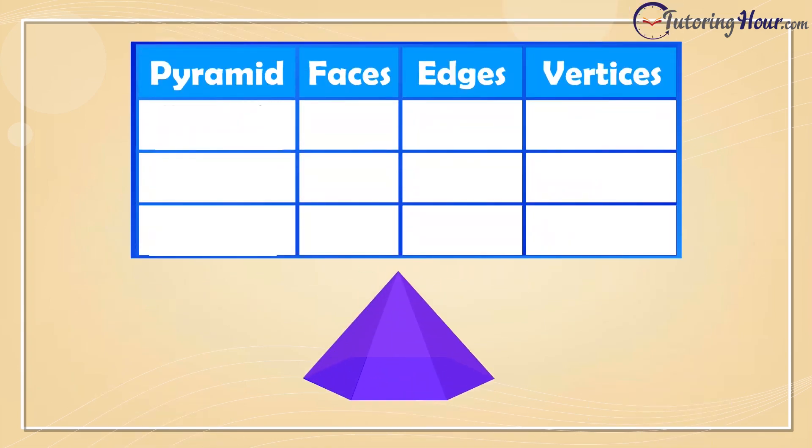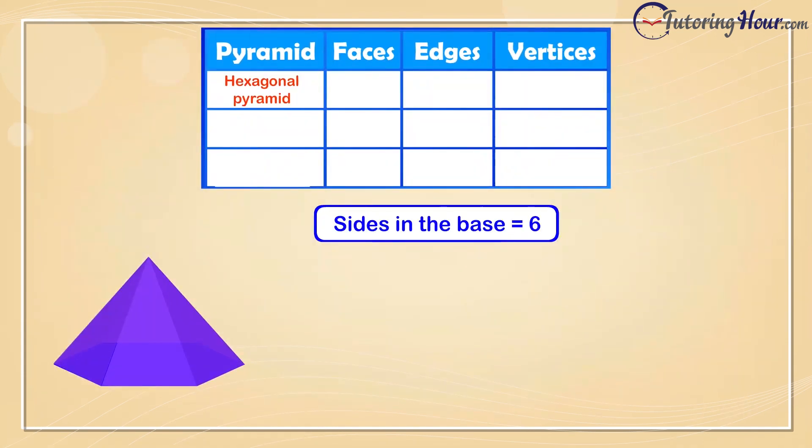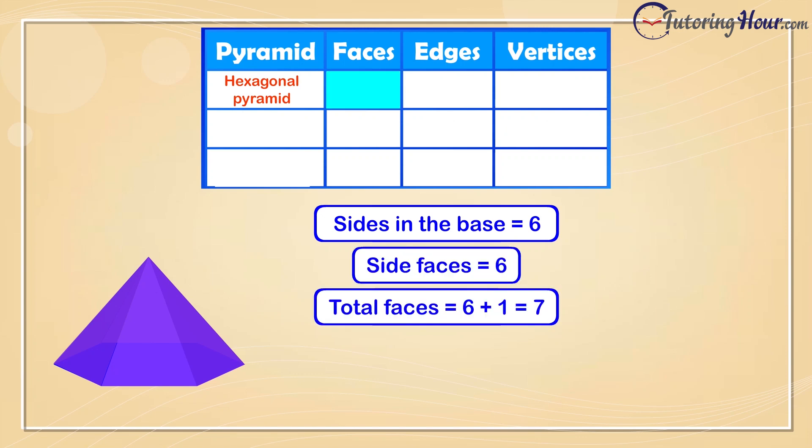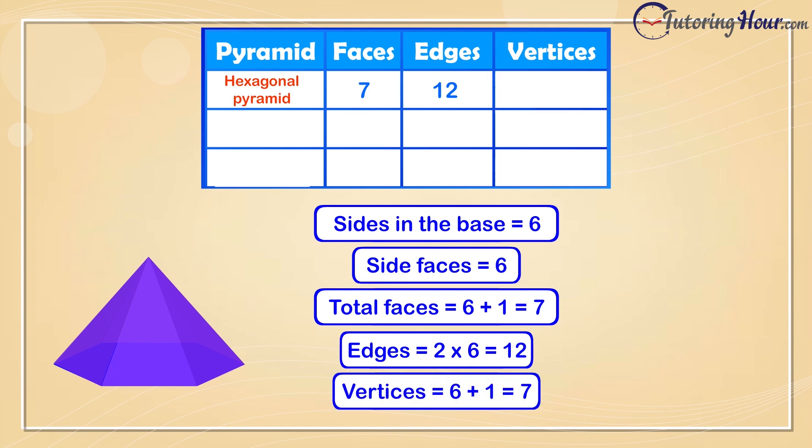Let's use this little trick and quickly fill up the faces, edges, and vertices of the hexagonal pyramid. The base of a hexagonal pyramid is obviously a hexagon. It has 6 sides and the number of faces is 6 plus 1, so we have 7 here. The number of edges is twice the number of sides in the base, so we'll write 12 here. The number of vertices is the number of sides in the base plus 1, so we'll write 7 here as well.